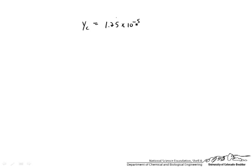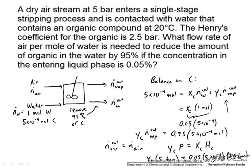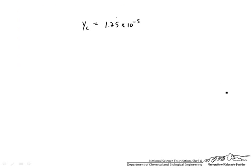That is a pretty low mole fraction of our contaminant. As we will see, that is going to lead to needing a very high flow rate of air. Going back to our balance equations, we plug in that value of Y_C. We have 0.05 times 5 times 10 to the minus 4 on one side, and 5 times 10 to the minus 4 moles on the other. Y_C is 1.25 times 10 to the minus 5. Our only remaining unknown is N_dot_vapor_out, which equals N_dot_air under our assumptions.